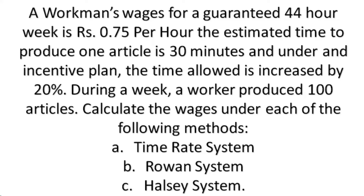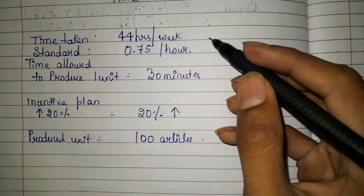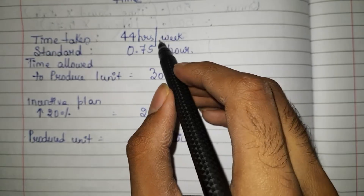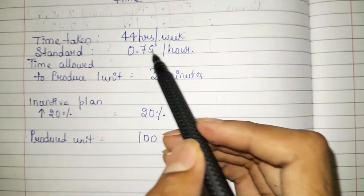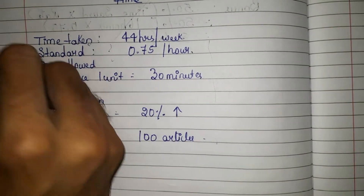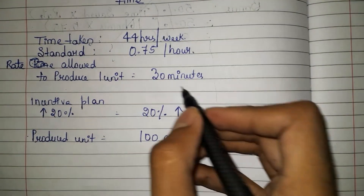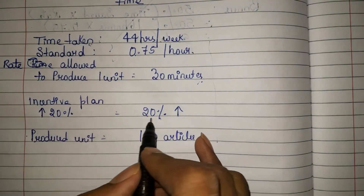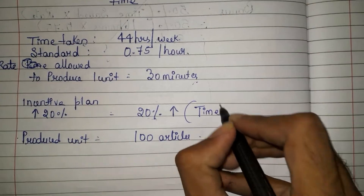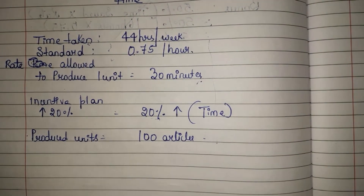So calculate the wages under each of the following methods. Under three methods we need to calculate the wages earned by the worker. The first one is the time rate system. So the given data: time taken is 44 hours per week, standard rate is 0.75 per hour, time allowed to produce one unit is 30 minutes, under incentive plan there is an increase of 20% in time, and the total units produced by the workman is 100 articles.